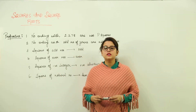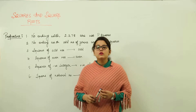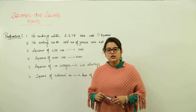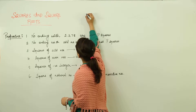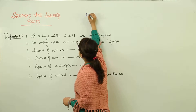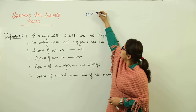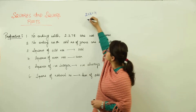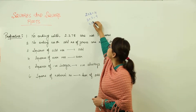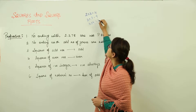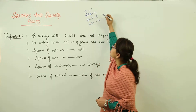The chapter we are doing today is squares and square roots. Square means any number multiplied two times. What is the square of 2? It will be 4. What is the square of 3? It would be 9. Square of 4 would be 16. What is the square of 1? It will remain 1 only.